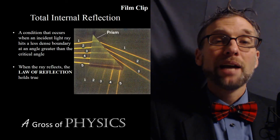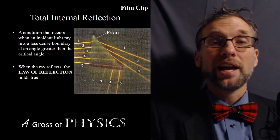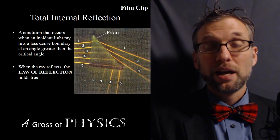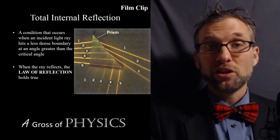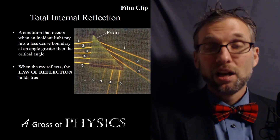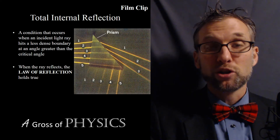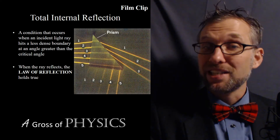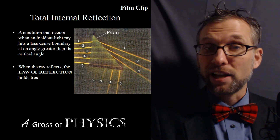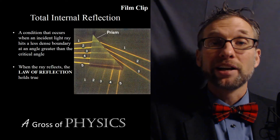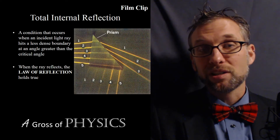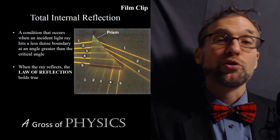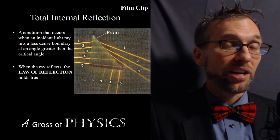The critical angle is just a threshold. If the incident ray is less than the critical angle, it will escape. If it's greater than the critical angle, it will be trapped. If it's exactly at the critical angle, the light will actually travel along the boundary at 90 degrees — still trapped, but it won't fully escape.